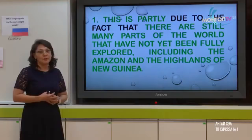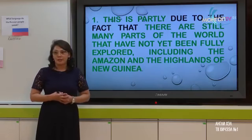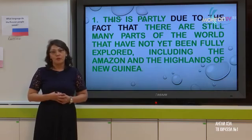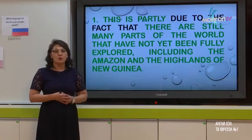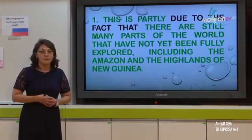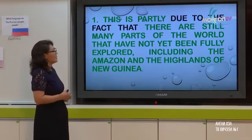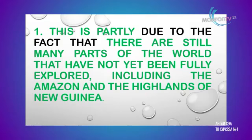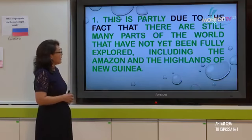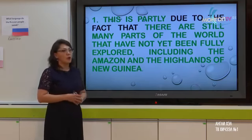Now continue — open your book to pages 100 and 101. There is a text about language, and there are three sentences in it using 'due to' and 'due to the fact that'. The first sentence in the text is: 'This is partly due to the fact that there are still many parts of the world that have not yet been fully explored, including the Amazon and the Highlands of New Guinea.' This conjunction is followed by a whole sentence, just as we learned.